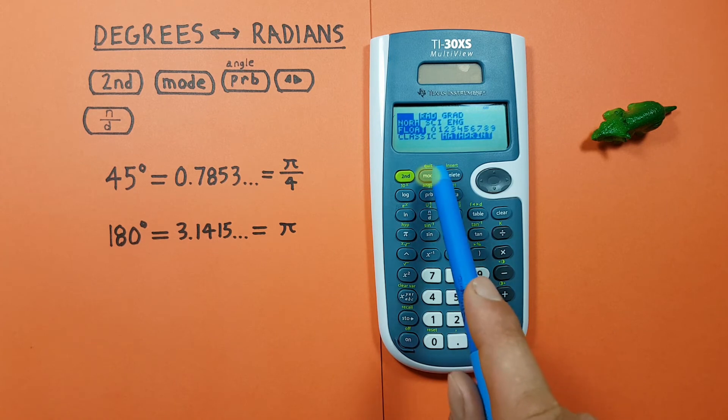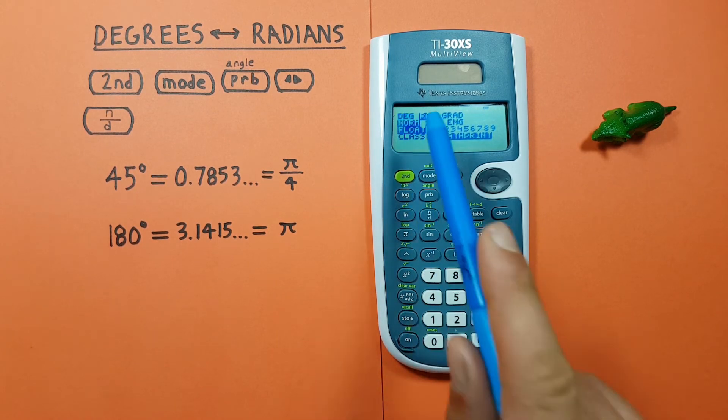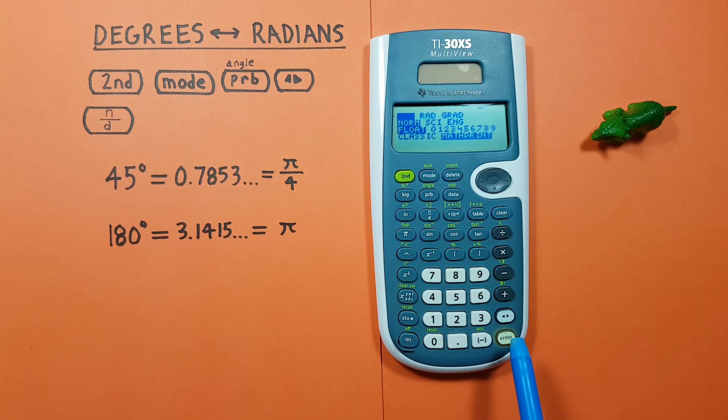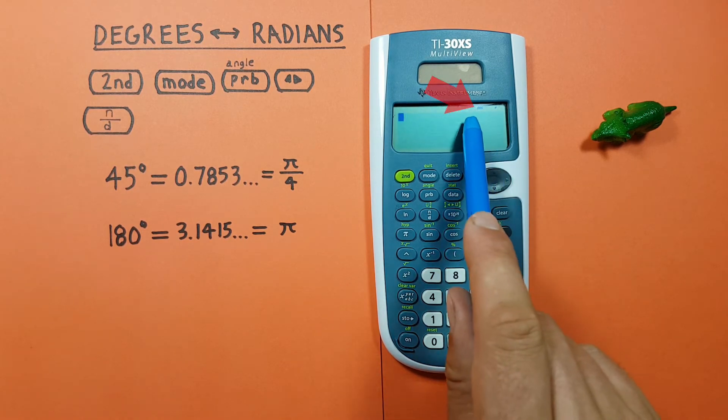We want to go mode, highlight the DEG, and press enter, and clear. And now we see DEG at the top of our screen, so we know we're in degrees mode.